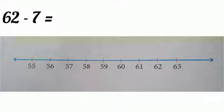Since we are subtracting 7 from 62, or our question is 62 minus 7, we should start from 62 and move 7 steps backward. 1, 2, 3, 4, 5, 6, 7.